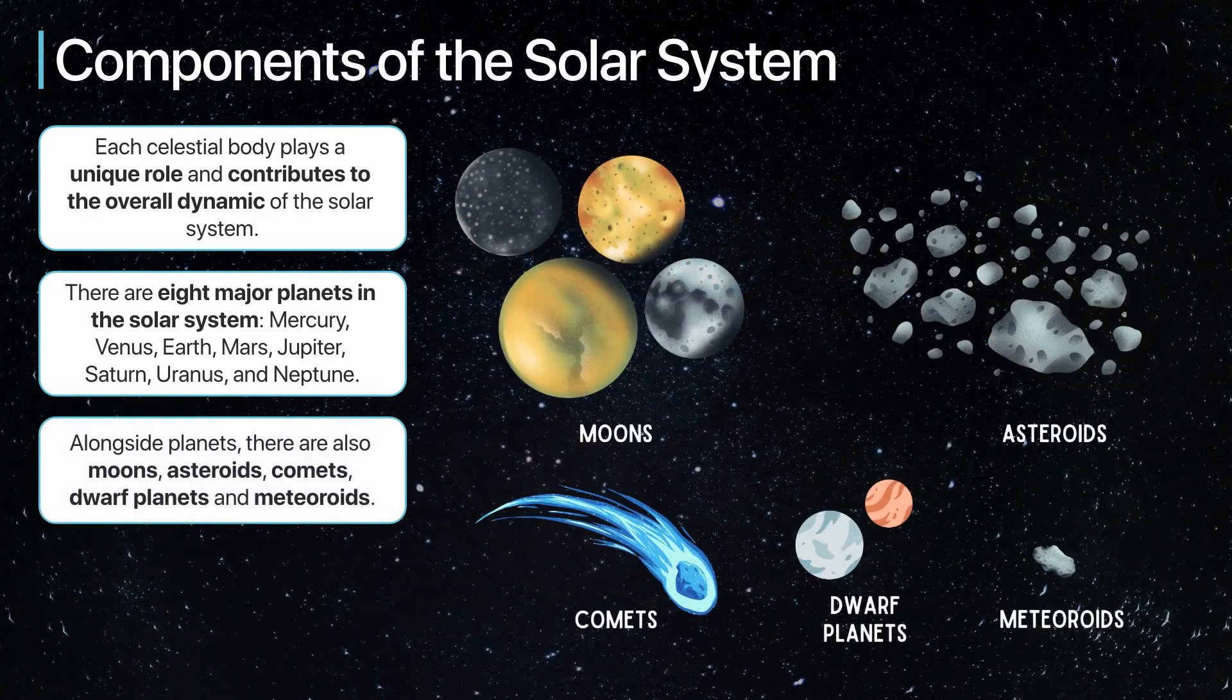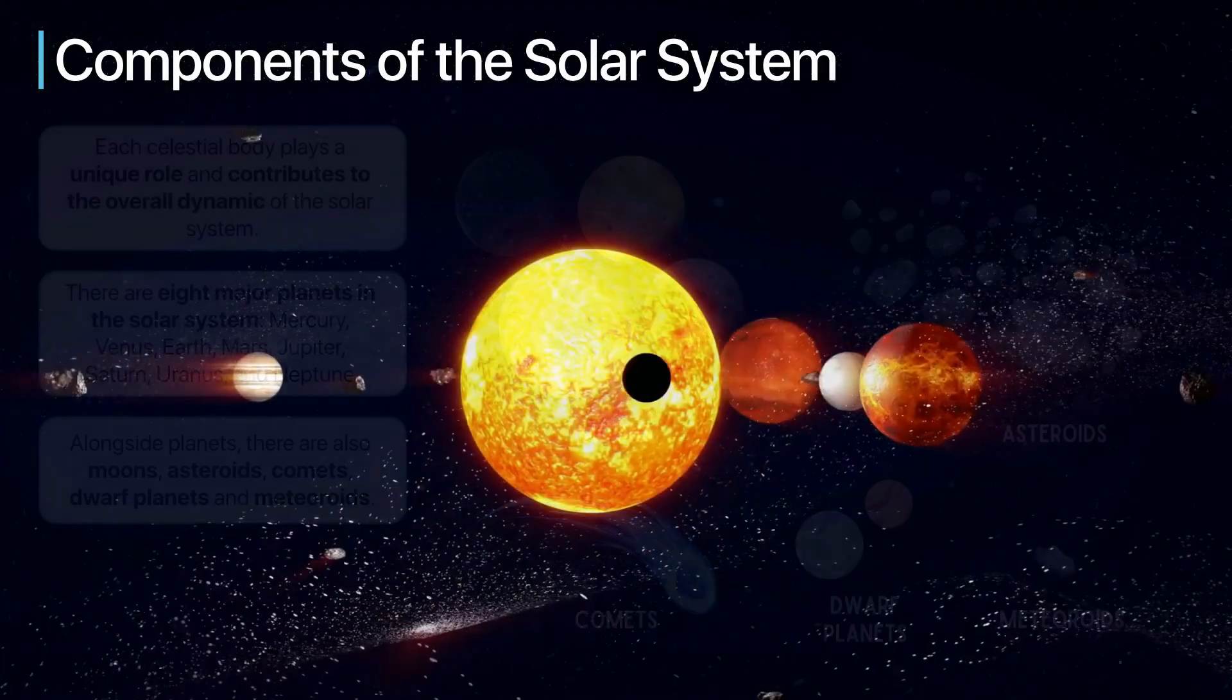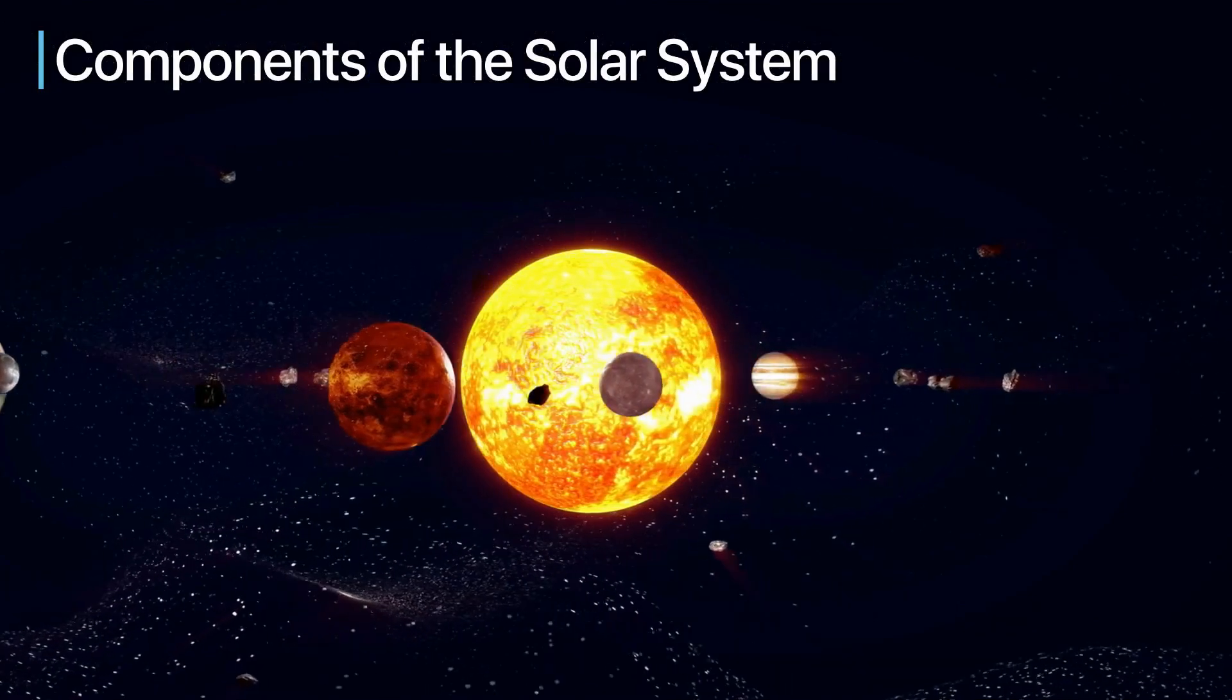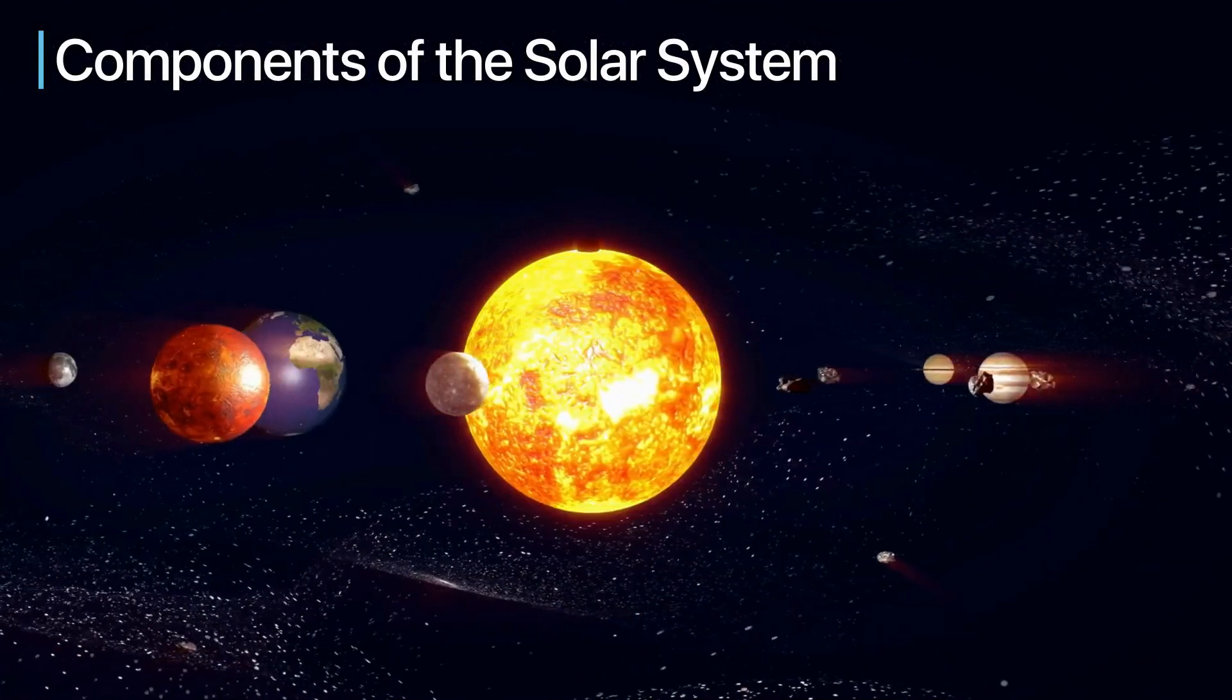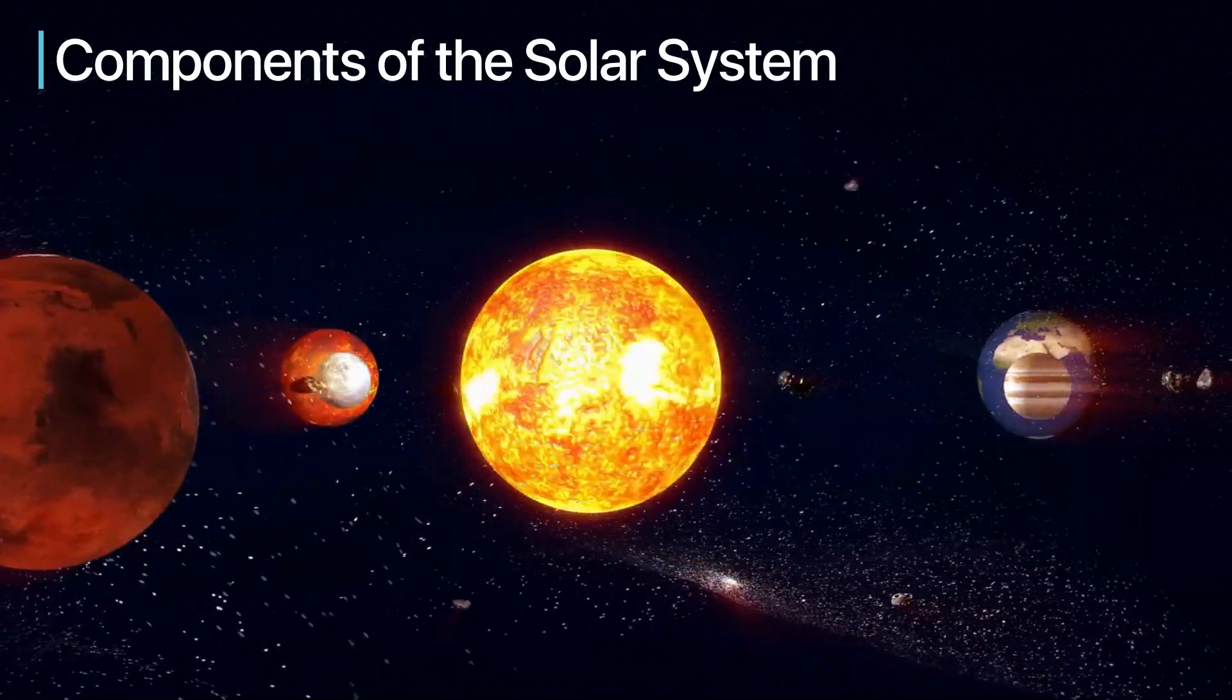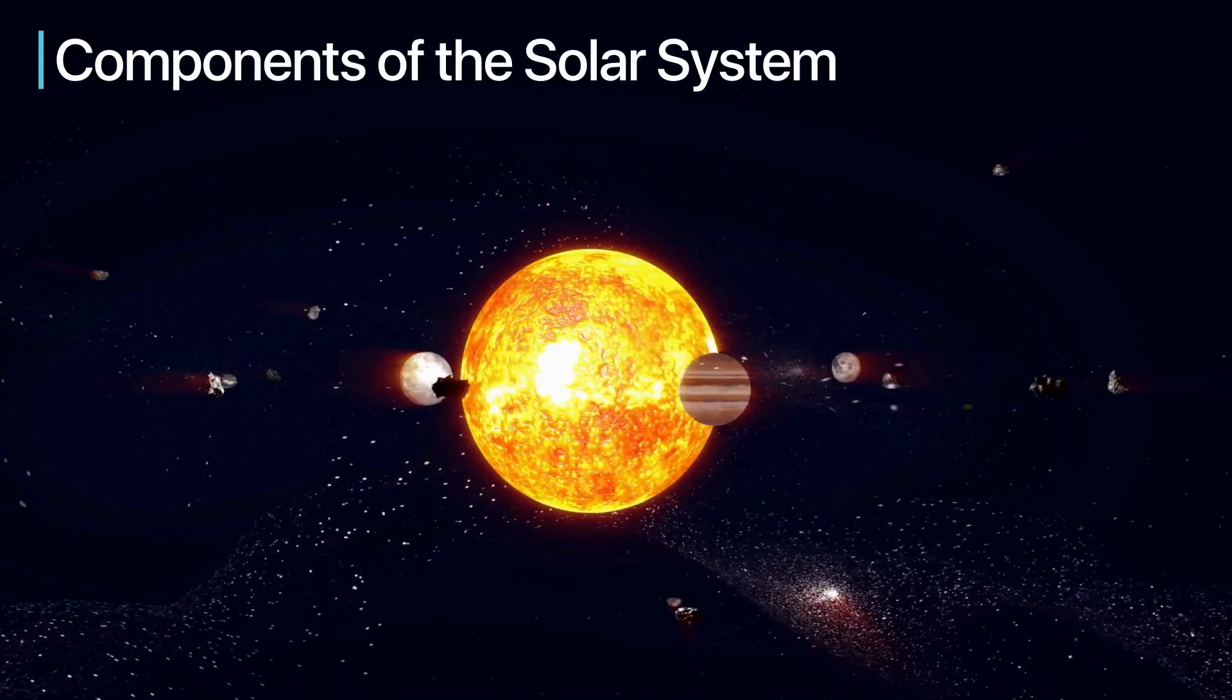Alongside planets, there are also moons, asteroids, comets, dwarf planets, and meteoroids. In upcoming lessons, we will explore some of these components in greater detail. We will learn about their unique characteristics and their role within the solar system. This will give us a deeper understanding of how our solar system is structured and how it operates.